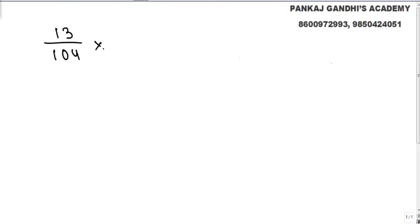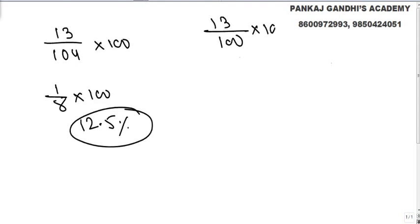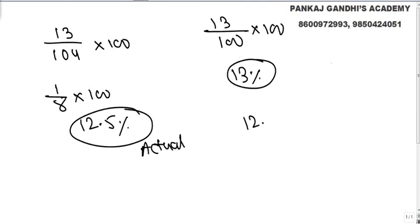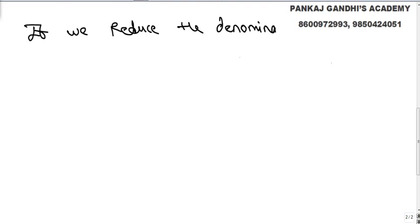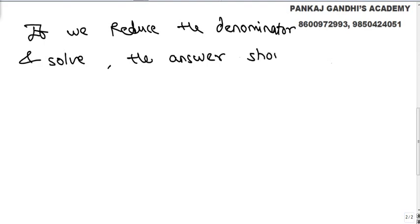Consider 13 upon 104 into 100 — 13 is what percent of 104? We know it is 1 by 8 into 100, that is 12.5 percent. But if someone does 13 by 100, making the denominator a round figure, they reduce the denominator. To get the actual answer, this answer should be reduced. If we reduce the denominator and solve the question, the answer should be reduced.